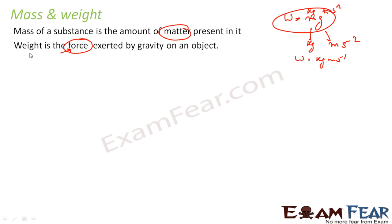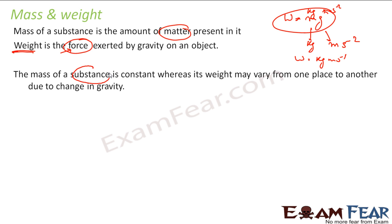The mass of a substance is constant anywhere. You go to moon, you go to earth, you go to equator, it does not matter. The mass is constant because mass is the amount of matter that is present in a substance.